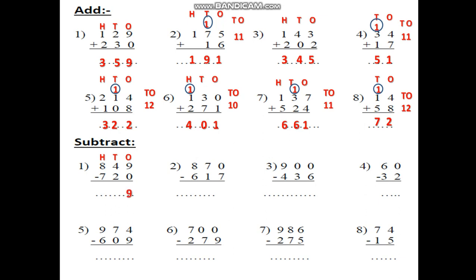4 minus 2. After the small, count 2 more. After 2: 3, 4. The answer is 2. 8 minus 7. After 7 is 8. It's 1. The answer is 129.